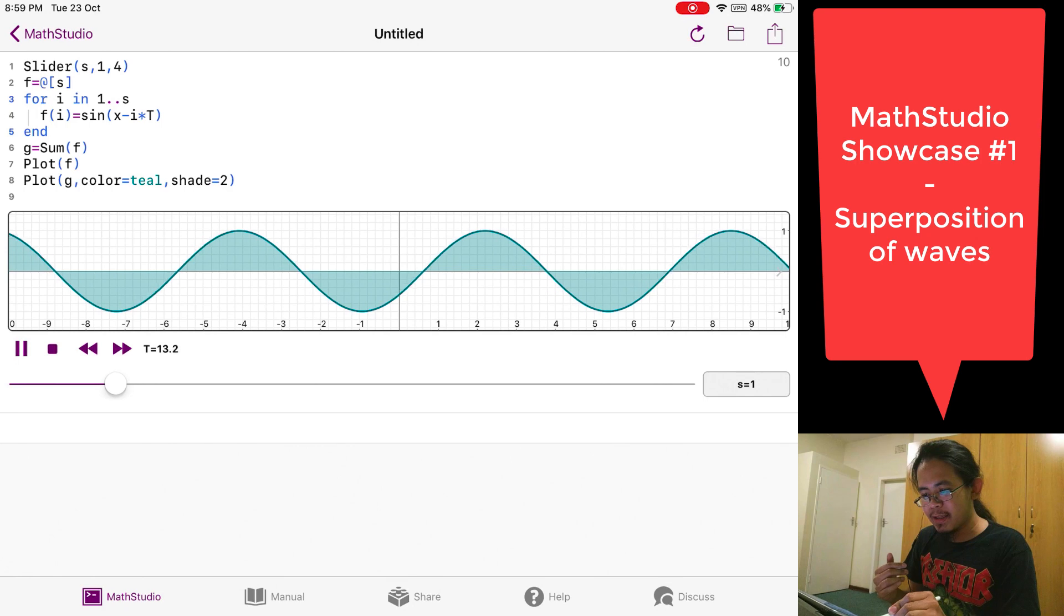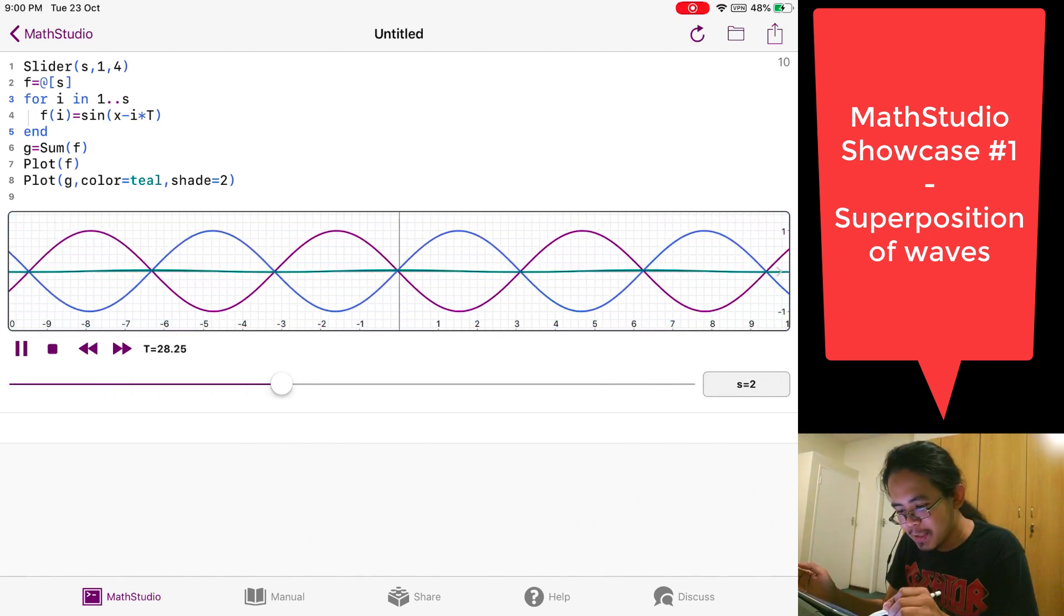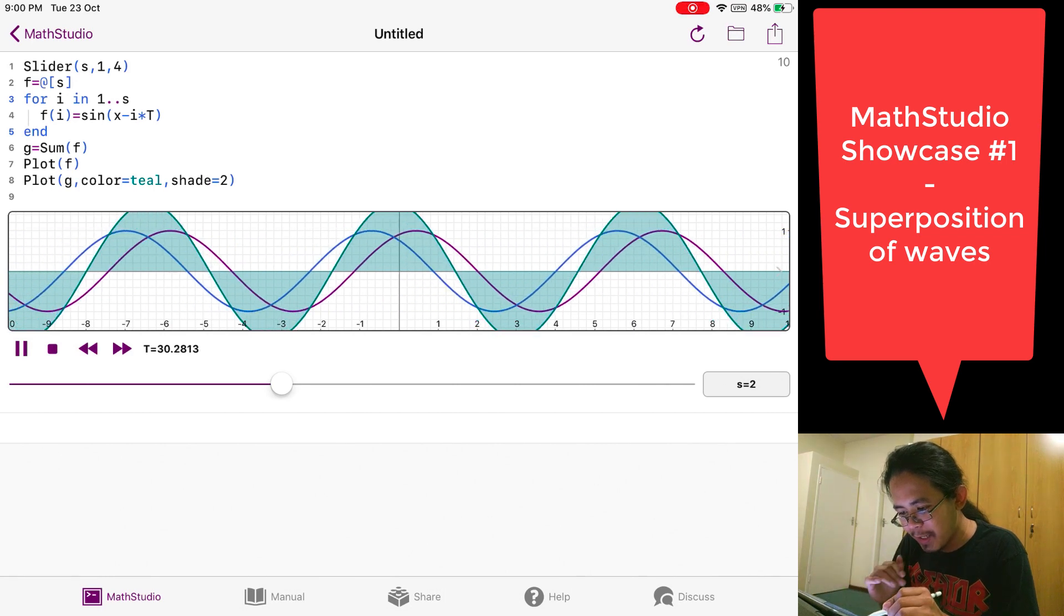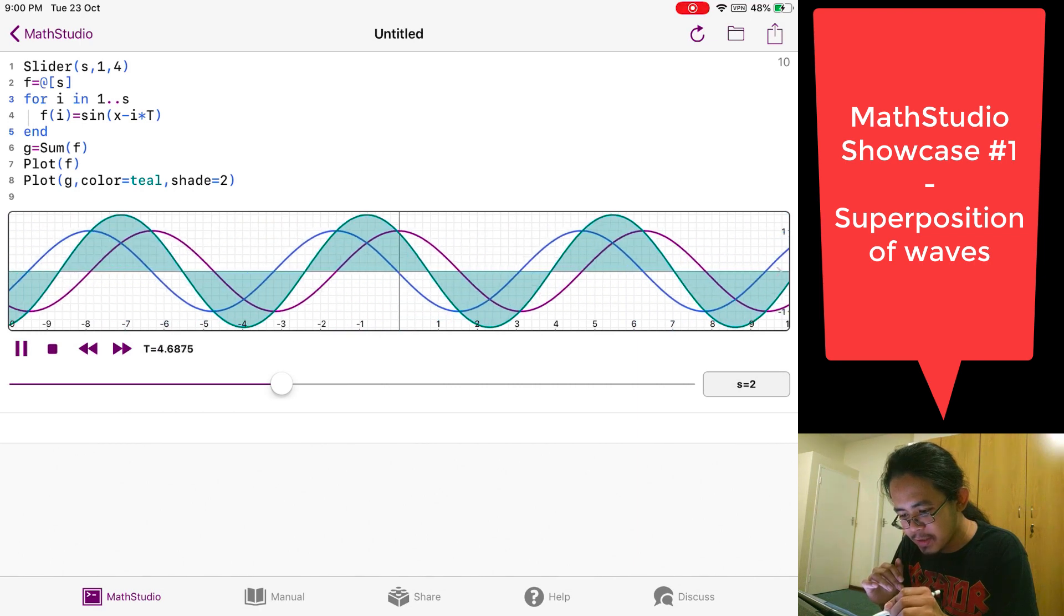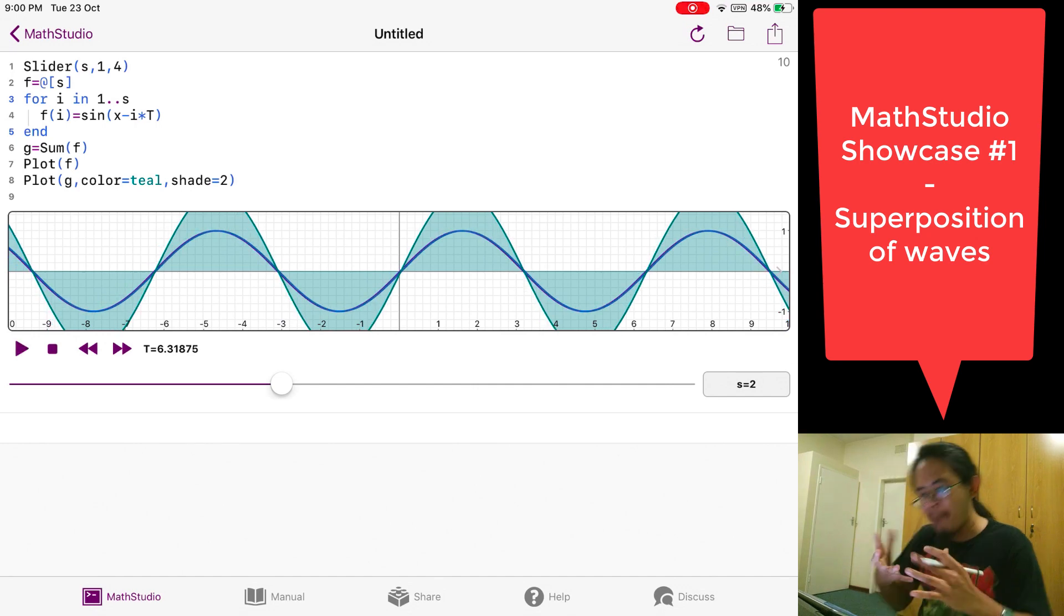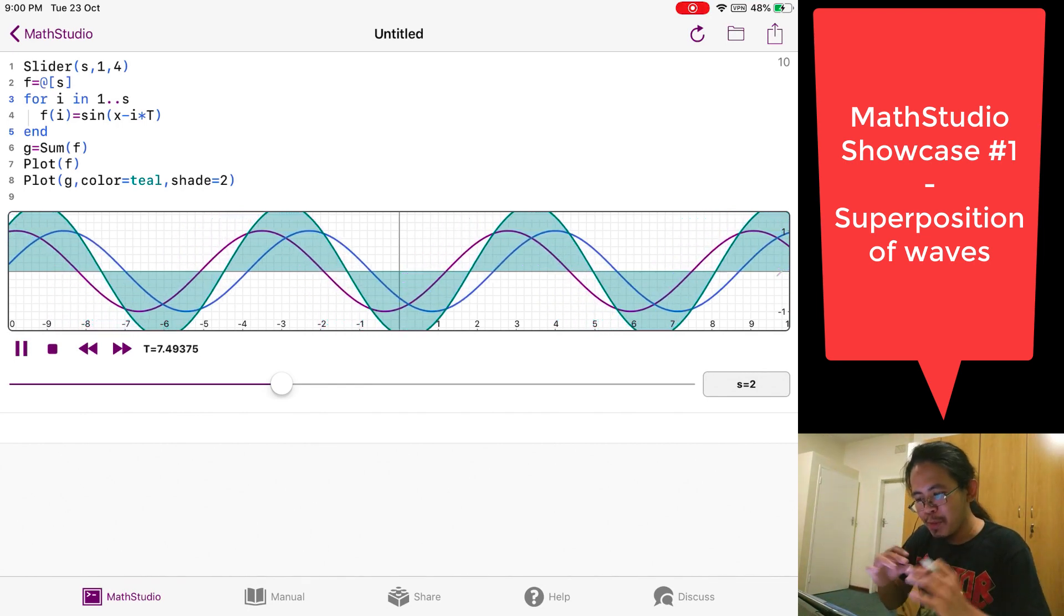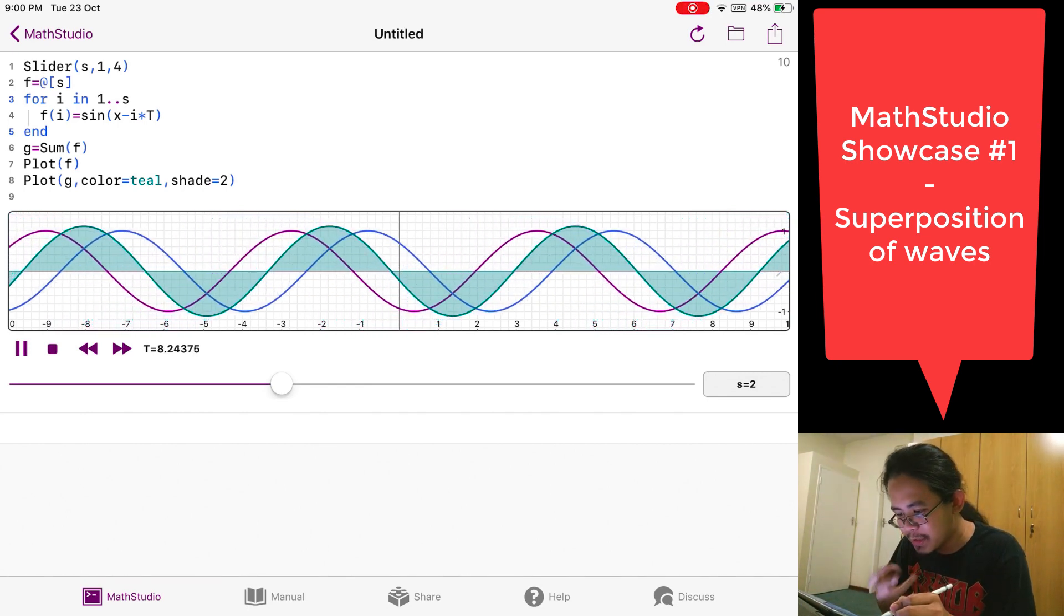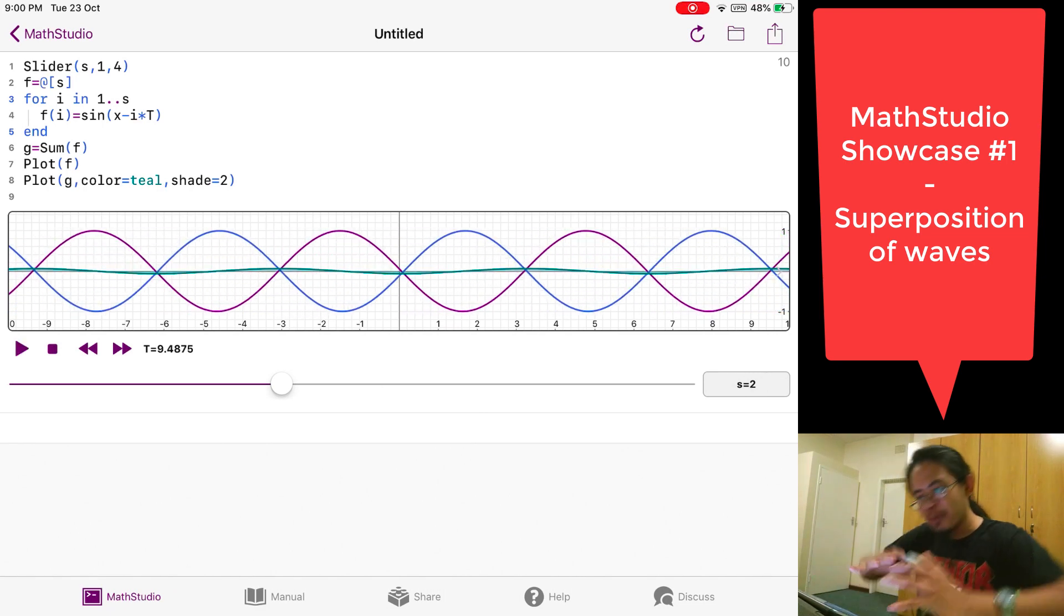So now let's make it S equals two. So now you can see the total. And so the nice thing is you can adjust the rate so that you can appreciate the moment. If you press this, the two arrows, it will slow it down. And you can appreciate that the moment they coincide, bam, that's the maximum sum for the total wave. And then the moment the top of the purple one coincides with the base of the blue one, the lowest point, then you get a zero total wave.